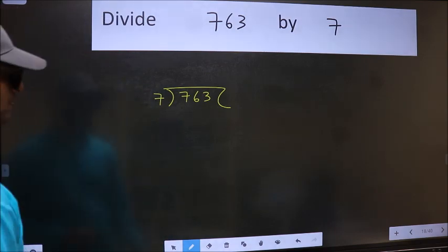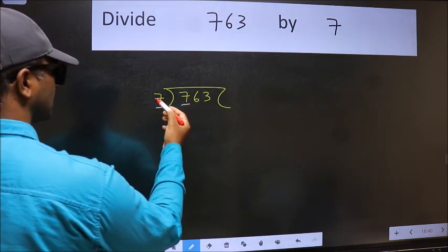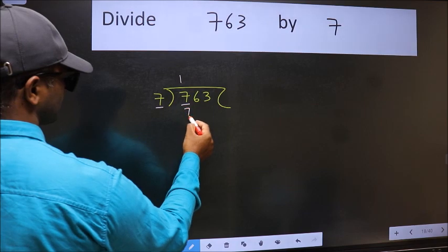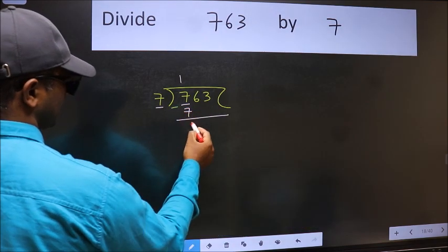Next. Here we have 7 and here 7. When do we get 7 in 7 table? 7 ones 7. Now we should subtract. We get 0.